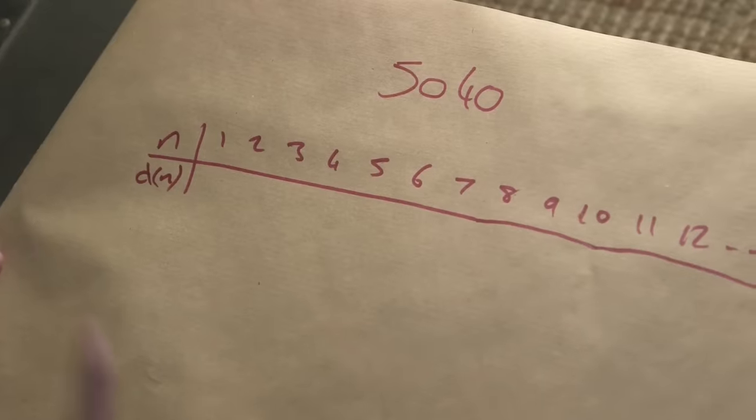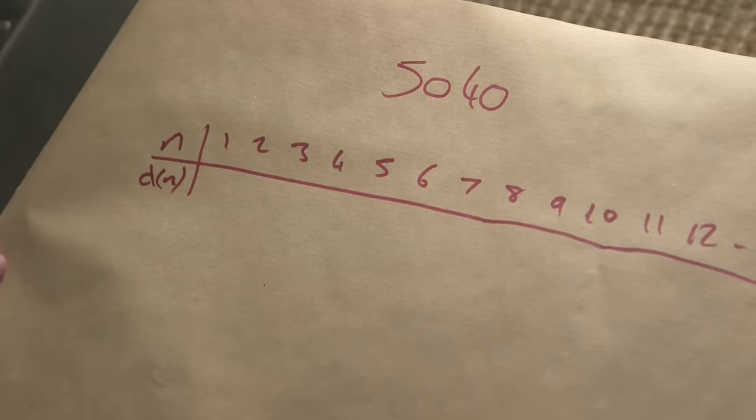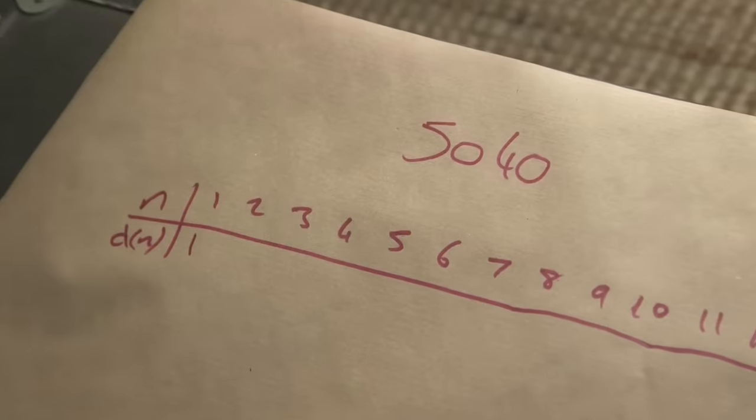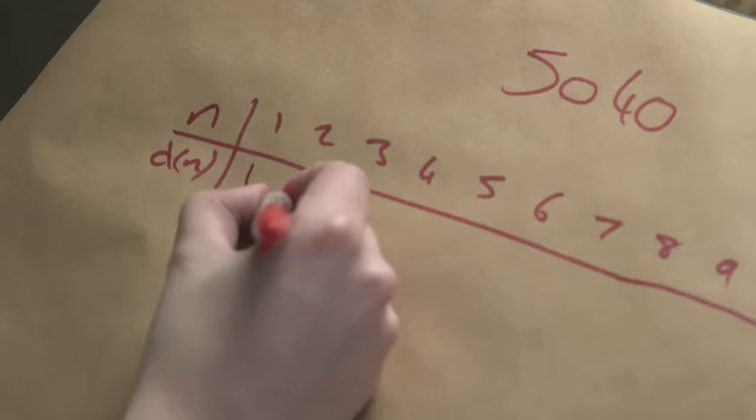So the definition of a highly composite number is one that has more divisors, factors if you want to call it factors, more divisors than any number smaller than it. Let's just run through the numbers and let's find some. So these are like the previous title numbers. Yeah, exactly. How many divisors for one? It's just one. So two, it's a prime. So like primes do, the only things that divide primes are one and itself. It has two divisors. Primes have two divisors.